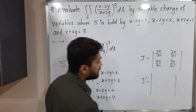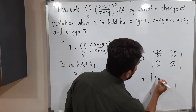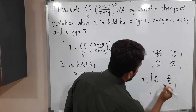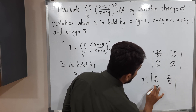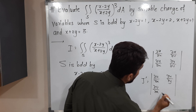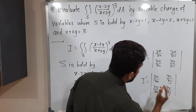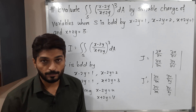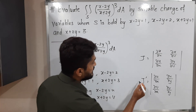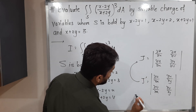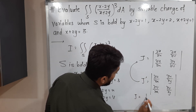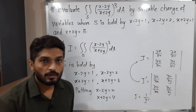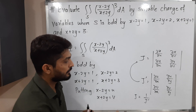J' has a similar formula: J' equals the determinant of ∂u/∂x, ∂u/∂y, ∂v/∂x, ∂v/∂y. Since u and v are already expressed in terms of x and y, we can easily find J'. Then we use the beautiful relation J = 1 / J' — so we find J', take its reciprocal, and we get J.